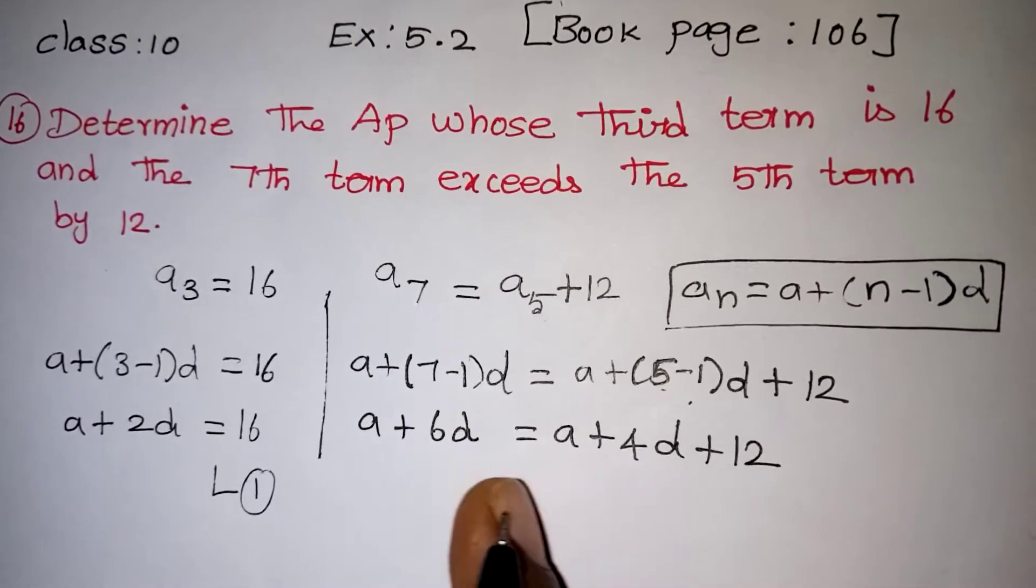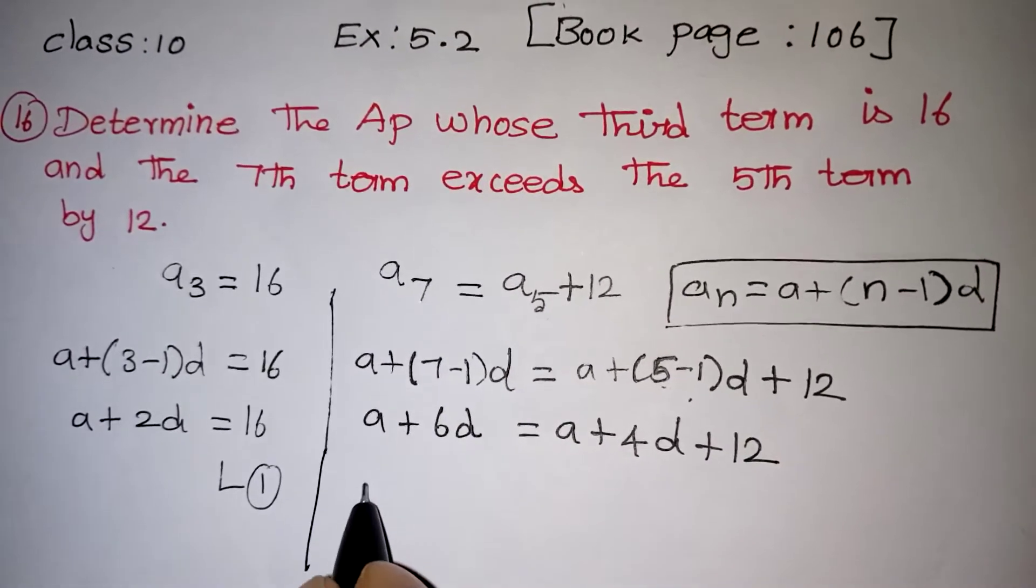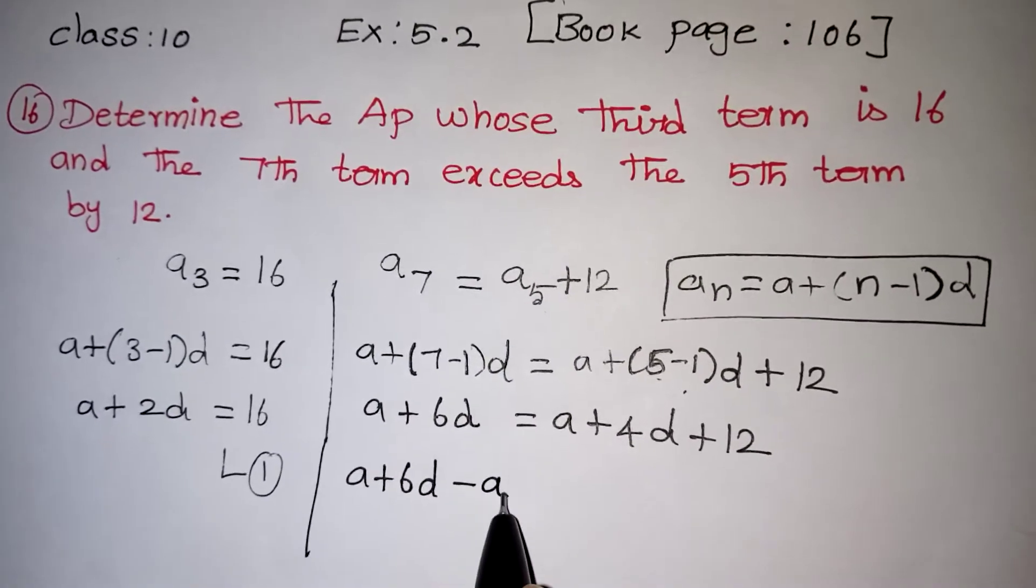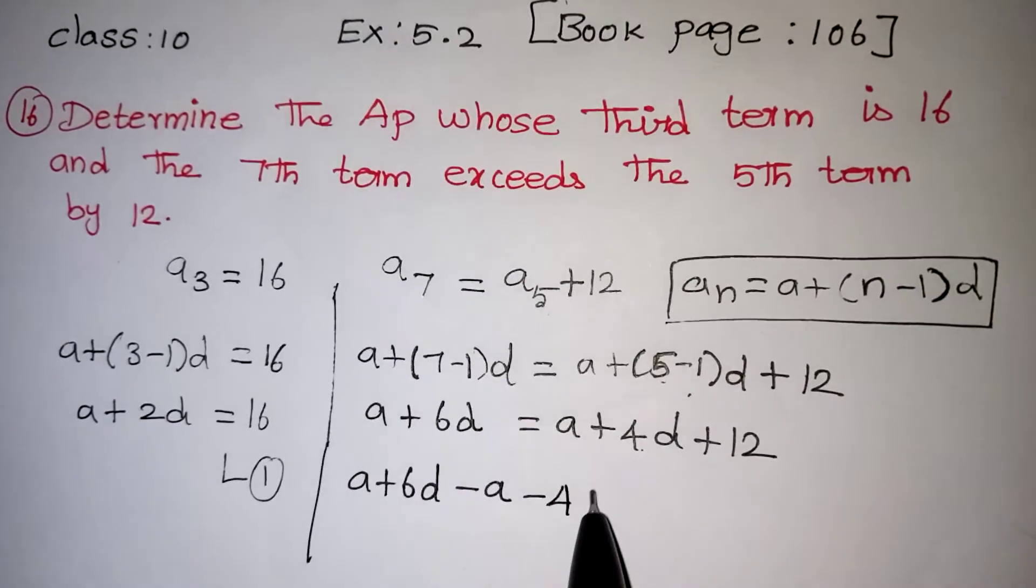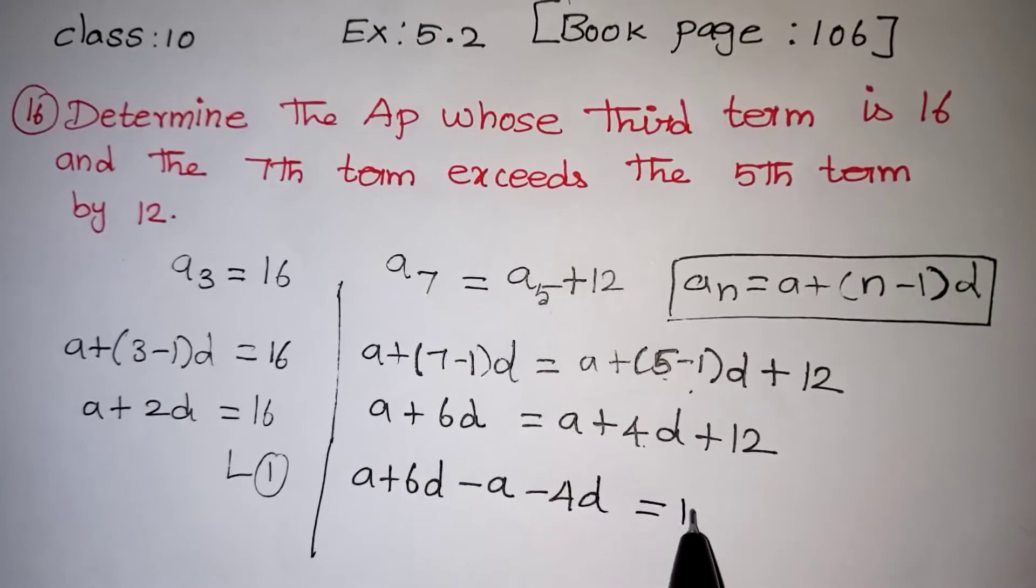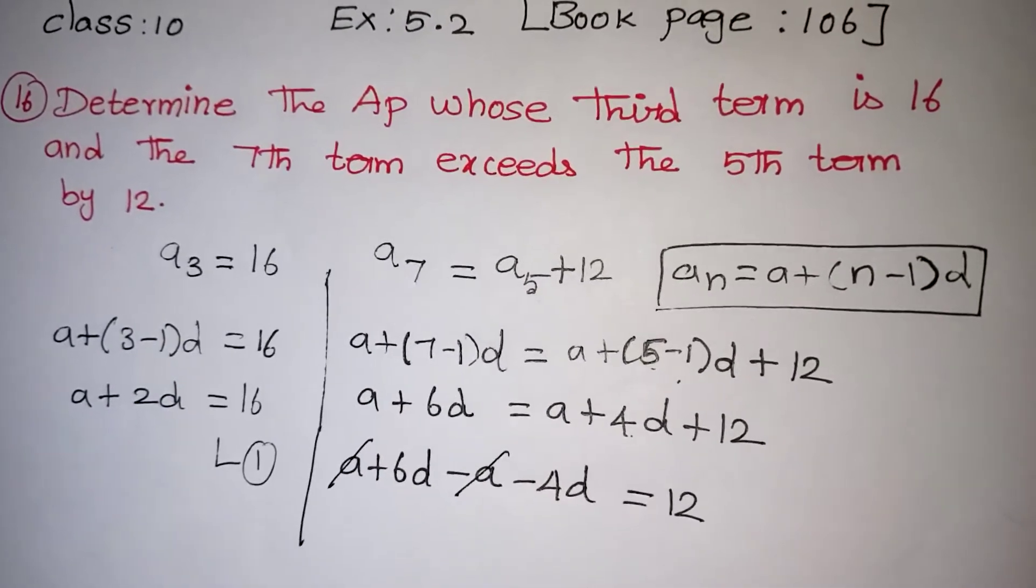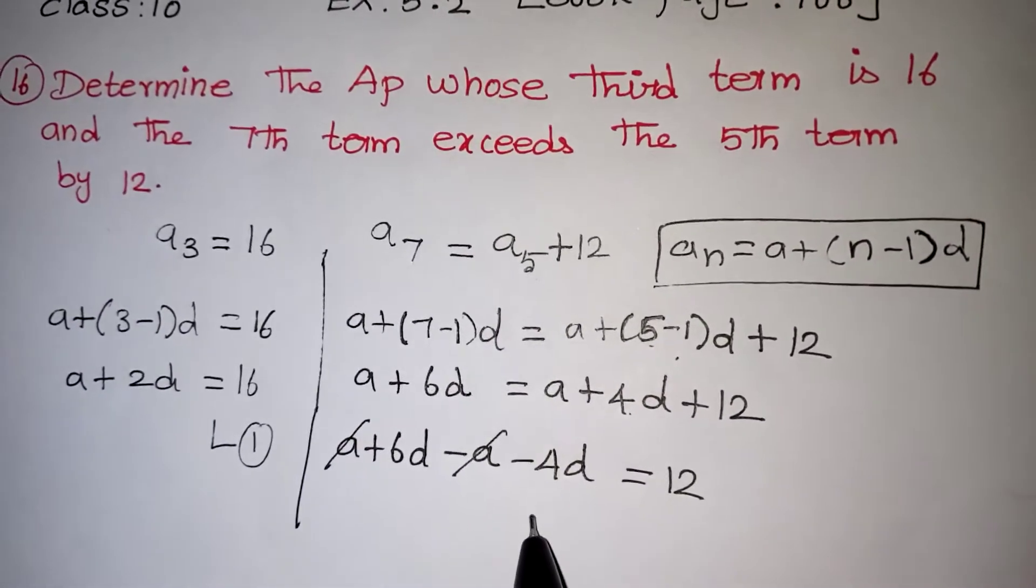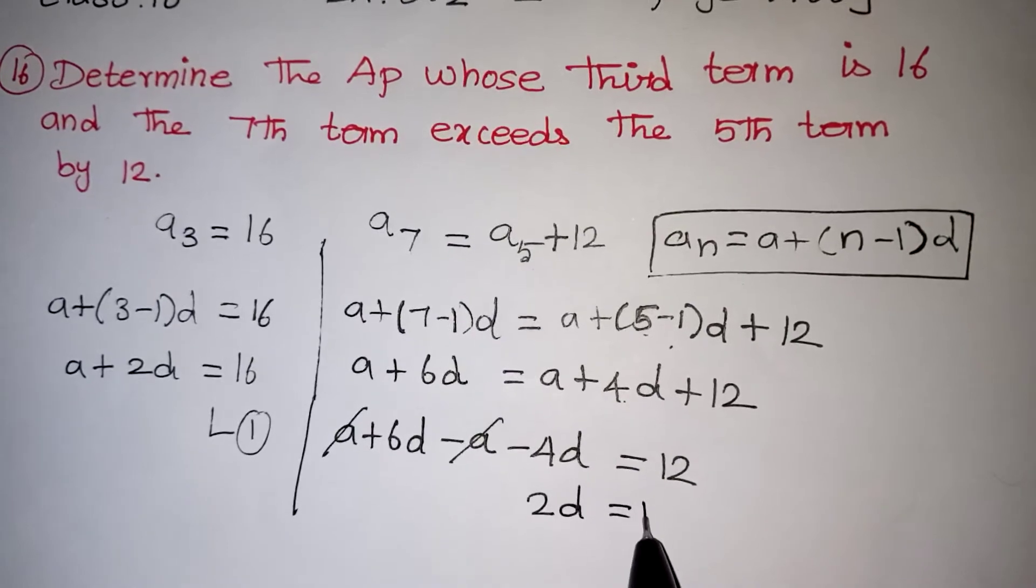Bring all the A and D terms to the same side. Here we have A plus 6D. This plus A coming to this side becomes minus A, plus 4D becomes minus 4D, which equals 12. Plus A minus A gets 0, so it cancels. 6D minus 4D gives 2D equals 12.